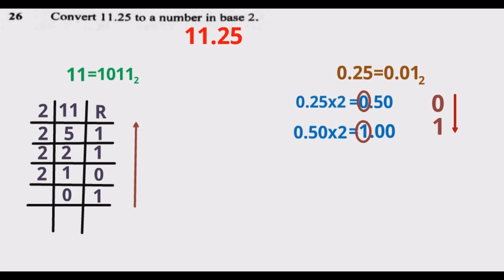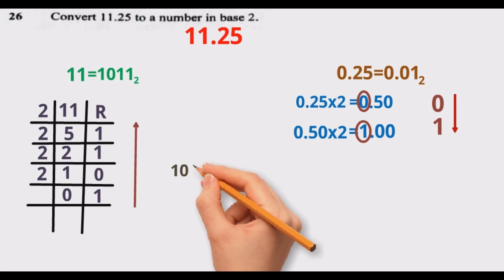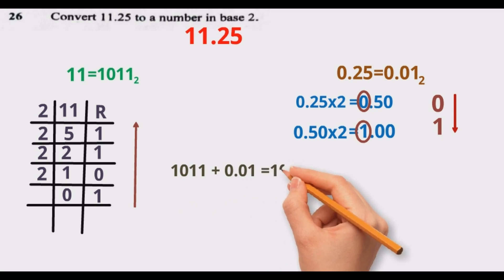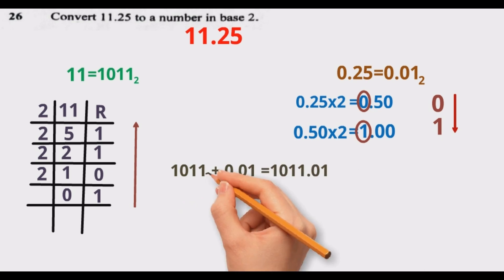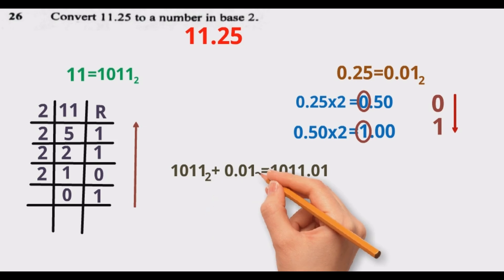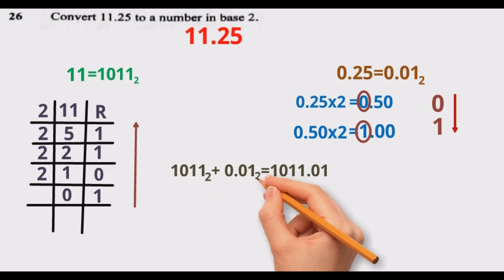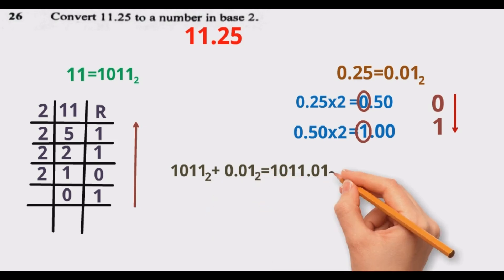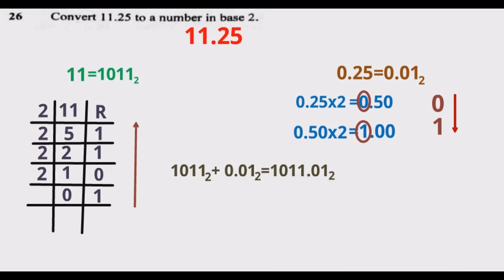Now I need to combine these two answers. I'm going to add them together: 1011 plus 0.01. Remember, these are in base 2 — you can see the base 2 sign there.